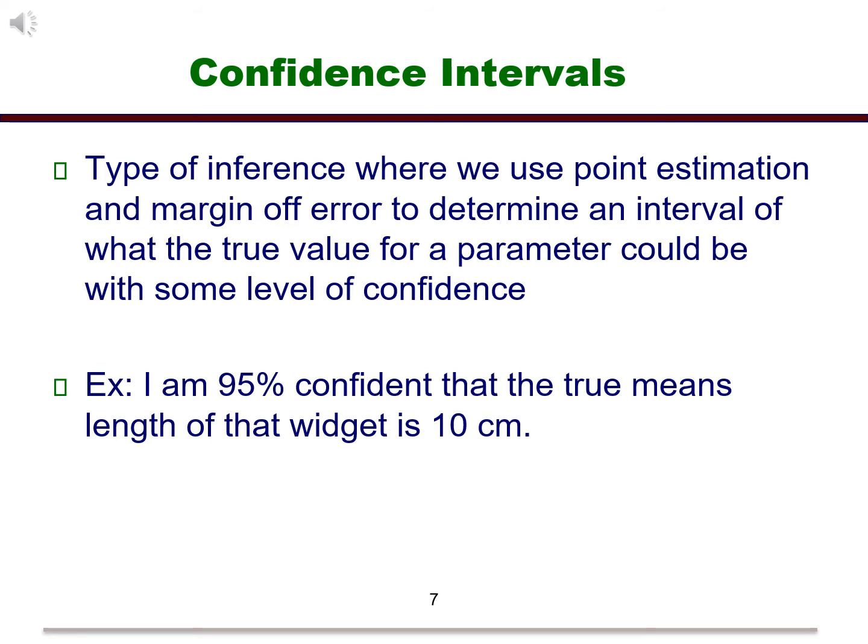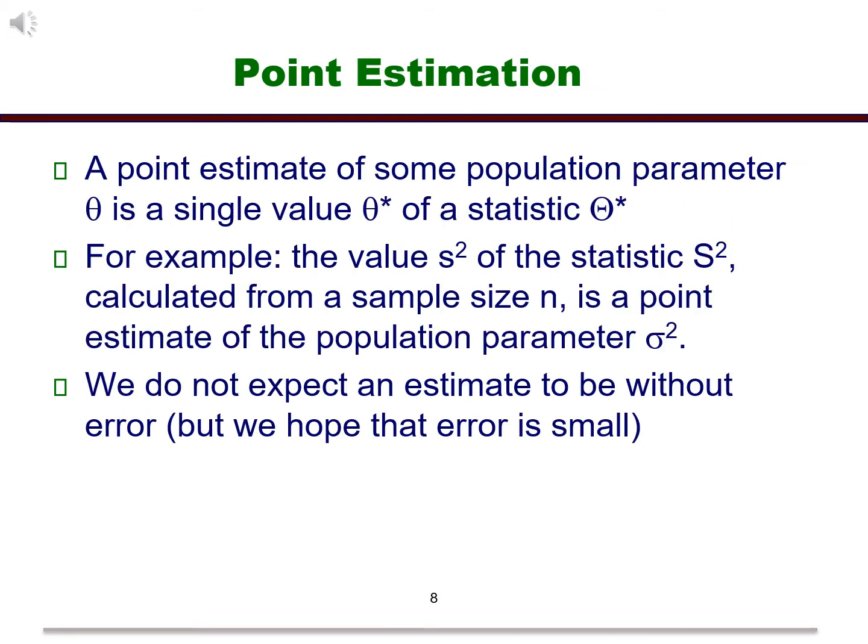A confidence interval is a type of inference that consists of a level of confidence in a range that the parameter could take on. It allows us to add some confidence to a point estimate. A point estimate of a parameter is a single value that is used to represent the parameter itself. All of our numerical summary measures are point estimates.